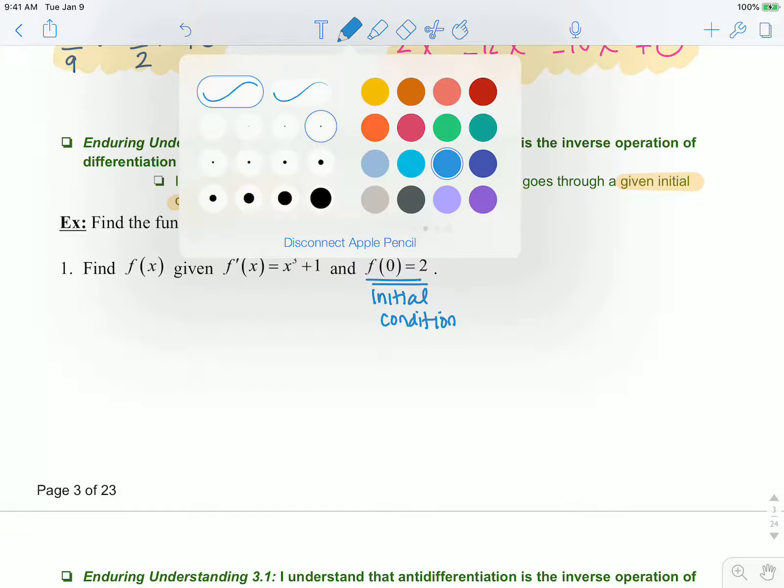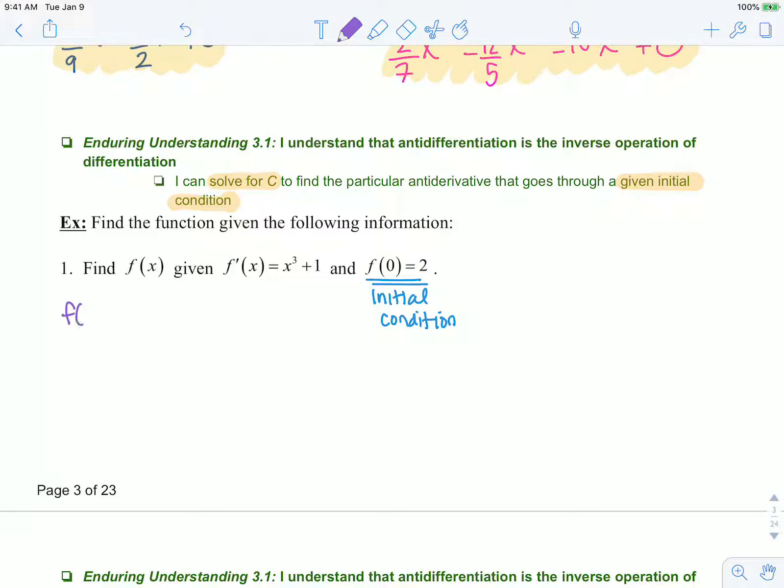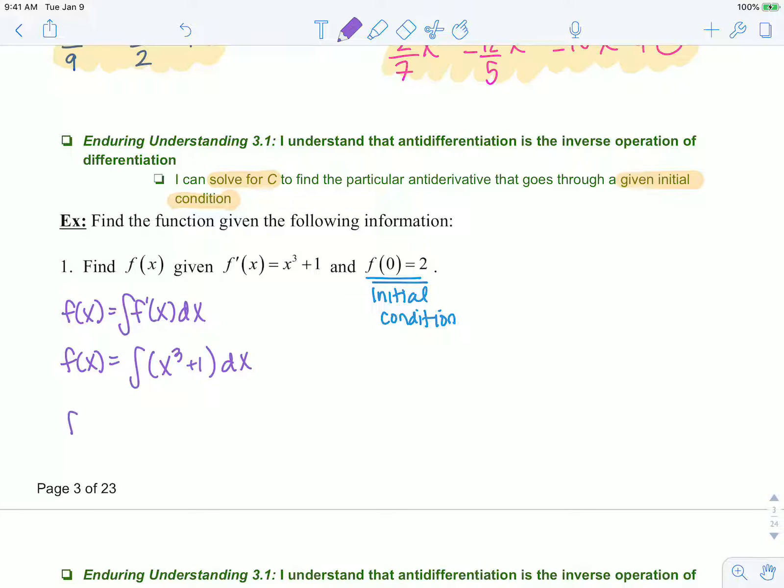So first thing we need to do is find f of x. Well we know f of x is the antiderivative of its derivative. So that is the integral of x cubed plus 1 dx. Using power rule this becomes 1 fourth x to the fourth plus x plus C.